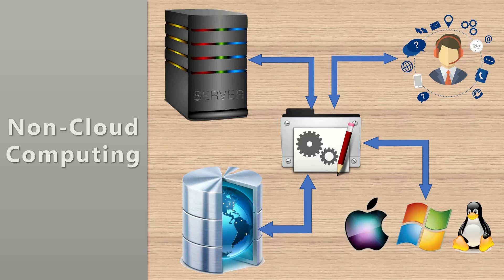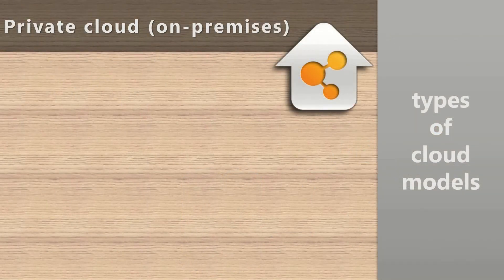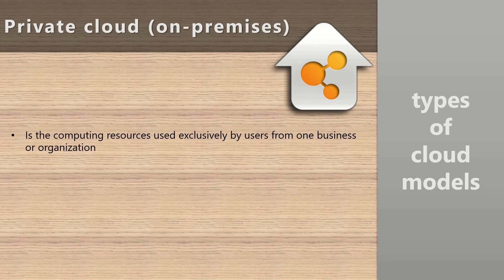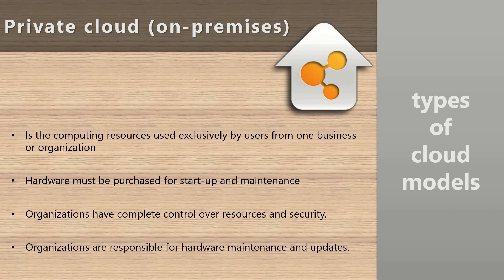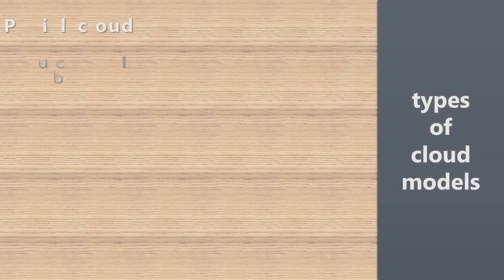There are three kinds of cloud computing models provided by any provider. The first is on-premises, also called private cloud. In this model, you as the owner manage the computing resources, used exclusively by your business organization. Hardware is purchased for startup and maintained by you. You have full control over resources and security, but you are also fully responsible for maintenance, updates, and security — and you can imagine how much of a headache that can be.